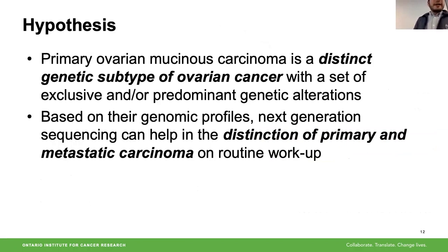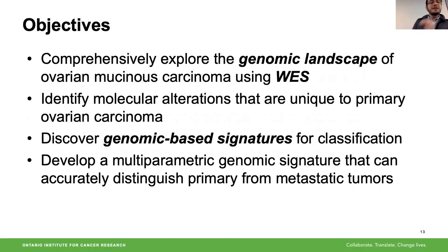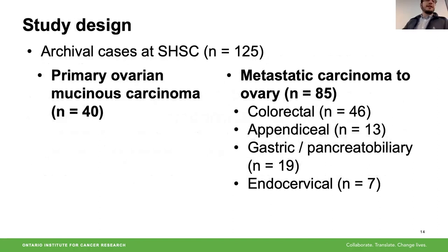With this background, we decided to attempt a genomic approach to profile ovarian mucinous carcinoma as a genetic subtype and identify elements that could help distinguish primary from metastatic mucinous carcinomas in routine pathologic workup. We used a whole exome sequencing approach. The cohort was constructed at Sunnybrook Health Sciences Center and includes 40 mucinous carcinomas proven to be primary, not only by pathologic and immunohistochemical staining but also by long-term follow-up.